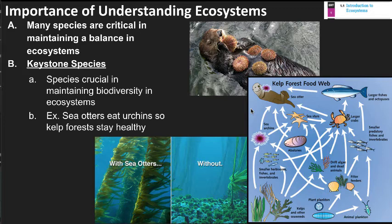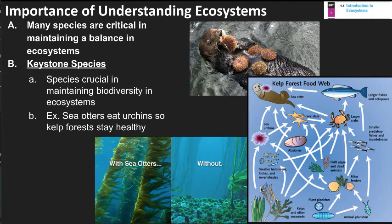It's important to understand how pieces fit together in these systems because we can have something like a keystone species. Many species are critical in maintaining balance — the otter in kelp forest ecosystems is a great example. The otter is a top predator controlling sea urchin populations. If we lose the otters, urchins reproduce unchecked, eat the kelp, and take out the kelp forests, really harming the biodiversity of the entire ecosystem.